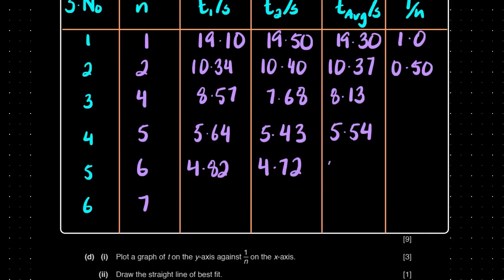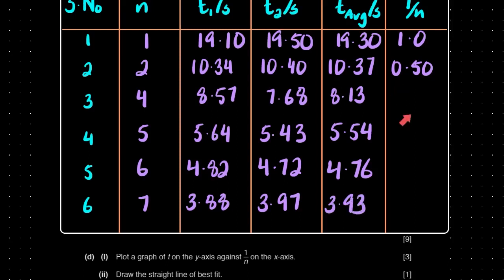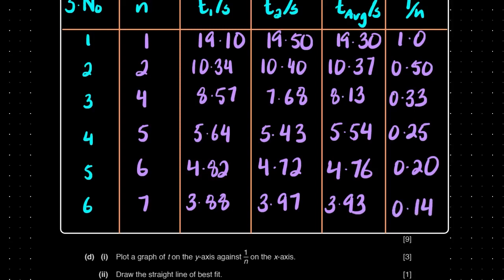For N = 7, I got 3.88 and 3.97, averaging to 3.93 s. The remaining 1/N values are: 1/3 = 0.33, 1/4 = 0.25, 1/5 = 0.20, and 1/7 = 0.14.